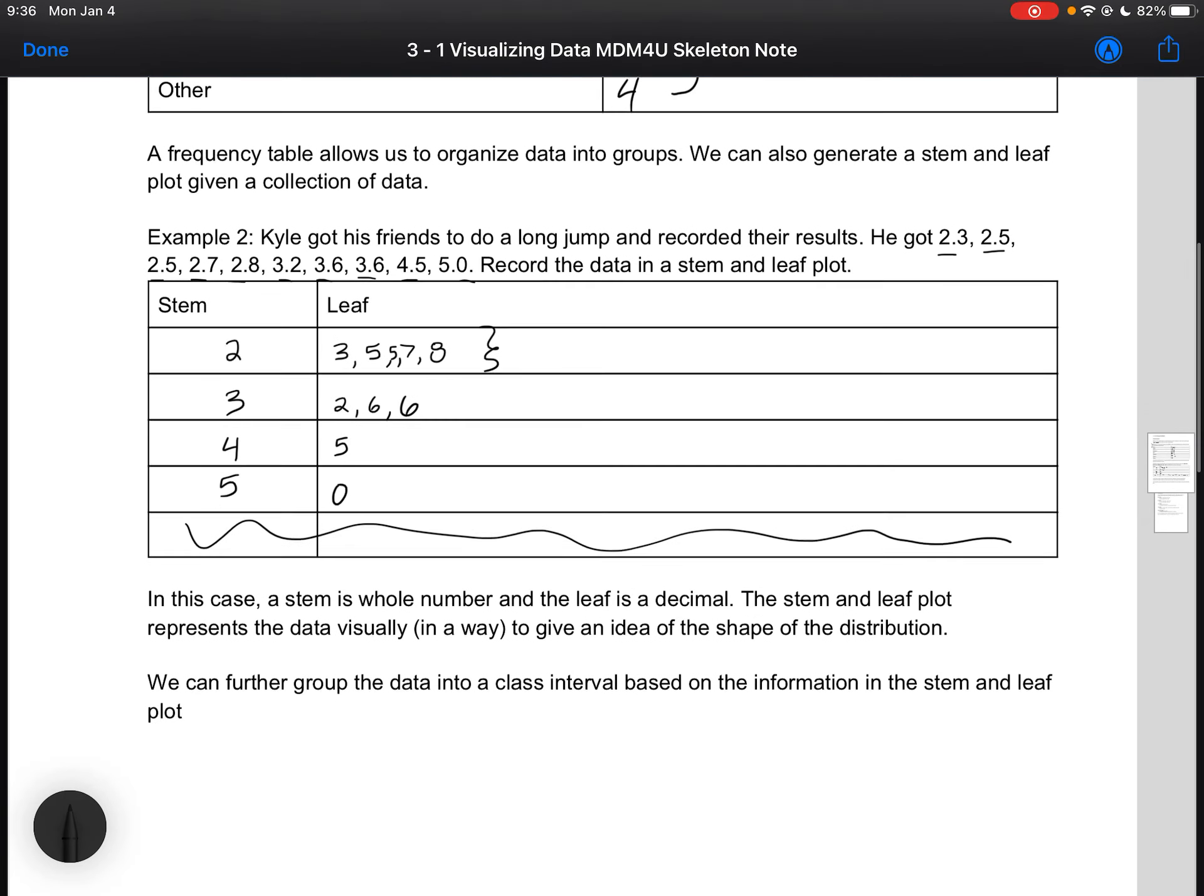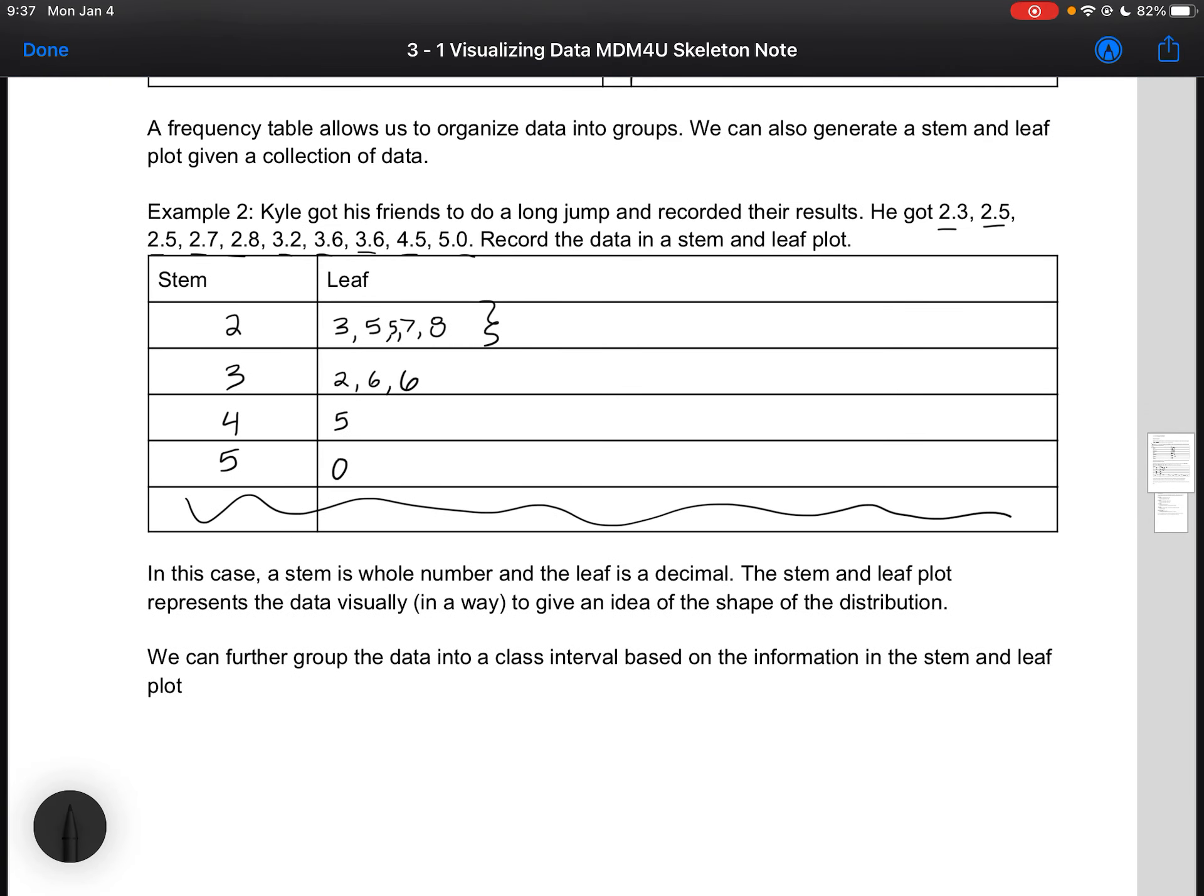This gives us an idea of the overall shape, so we can further group the data into a class interval based on this information in the stem and leaf plot. This one, it's not all that helpful because we don't have that many data points. As you generate more data it becomes more important to be able to organize or to bin data.